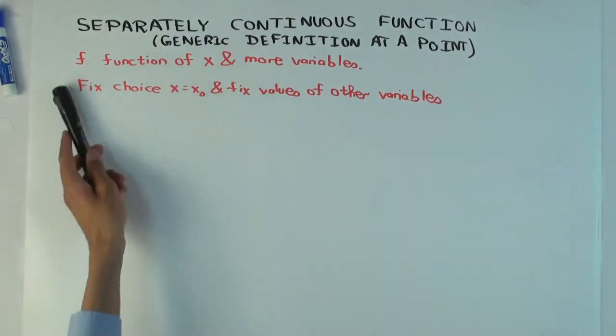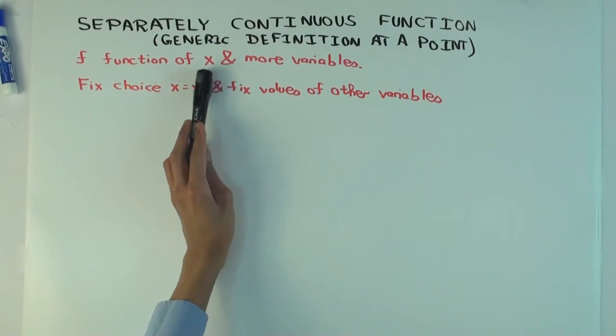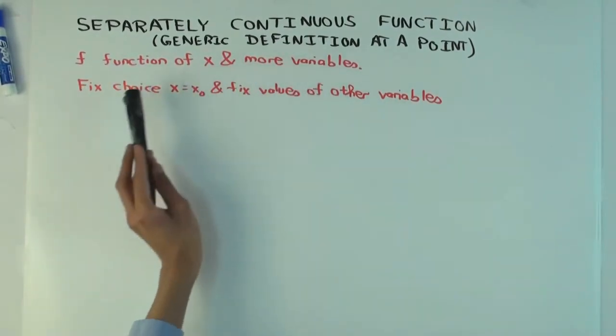So f is a function of more than one variable. One of the inputs to f is x. So f is a function of x and other variables.